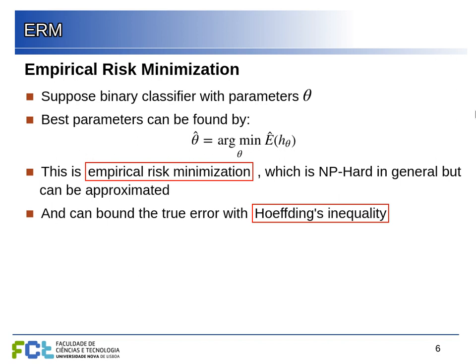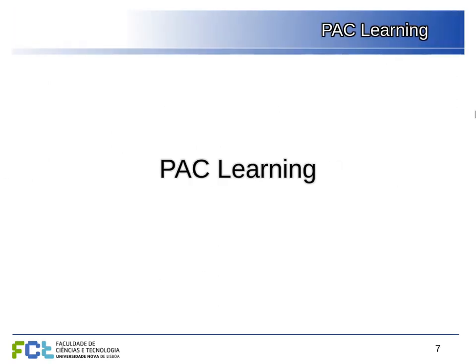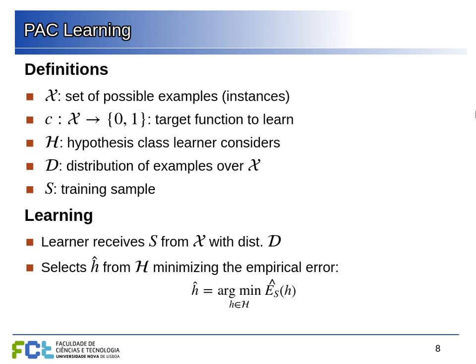The question is: what does minimizing the empirical risk imply for the true error? We are minimizing the empirical risk because that's what we can measure, but what we really want is a hypothesis with a low true error so it works on different examples. This is a bit like looking for our keys under the lamp post because that's where the light is. We'll use Hoeffding's inequality to compute bounds on the probability of getting some true error based on what we're doing.